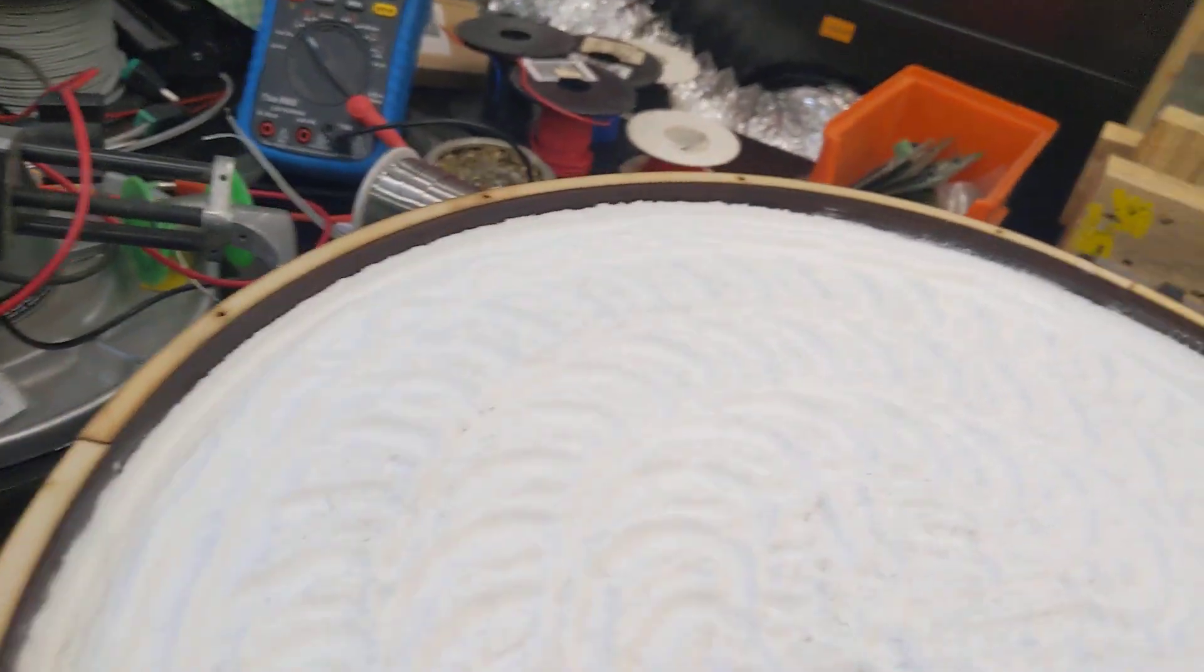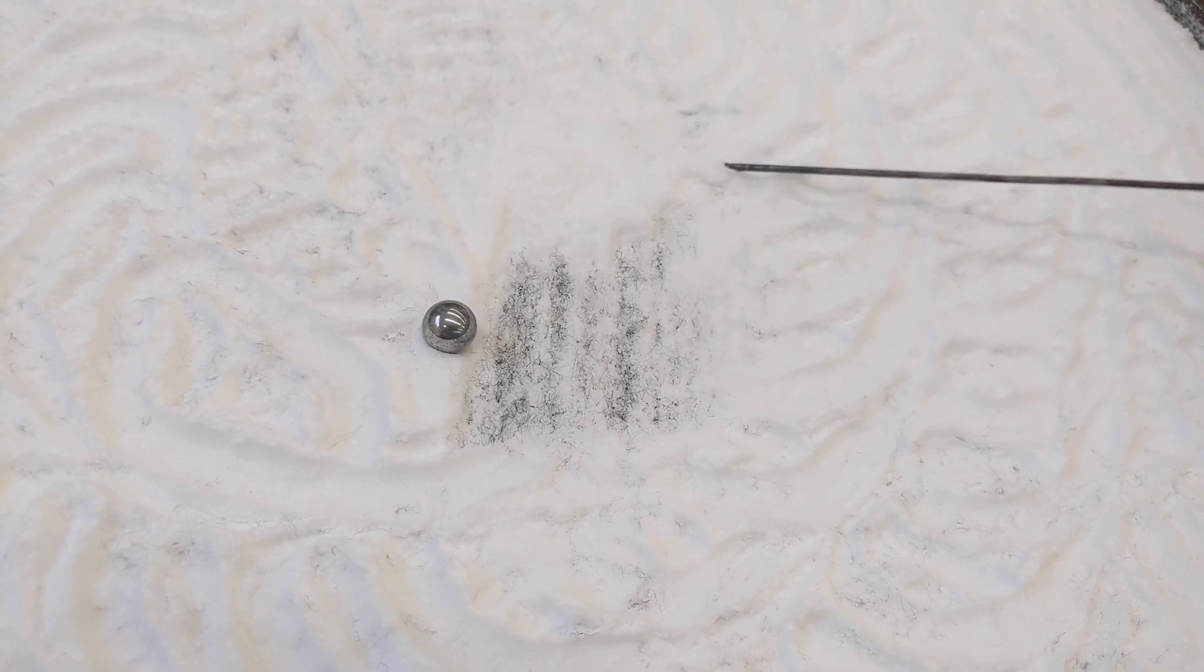So if I sort of dig aside a bit of sand here, you can see the black felt underneath. Yeah, it seems like little black tufts have sort of polluted the sand.